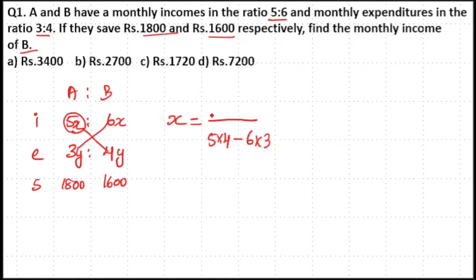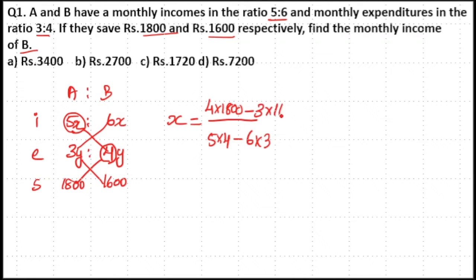Now if you want to find out the numerator of x, take the second and third row, mark the second value of the second row, then cross multiply between 4 into 1800, then subtract 3 into 1600 from it. This will be your numerator — that is, 4 into 1800 minus 3 into 1600.